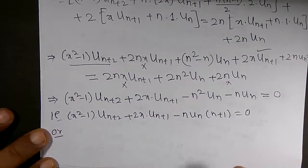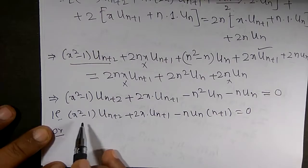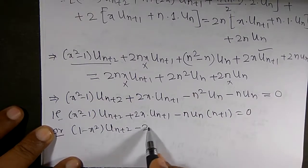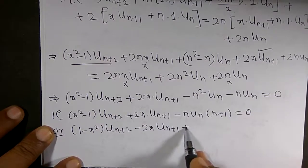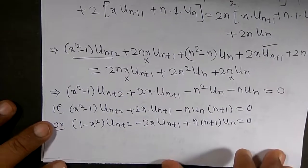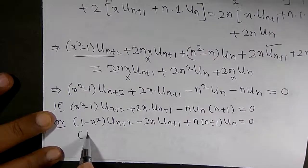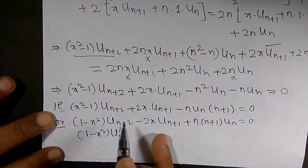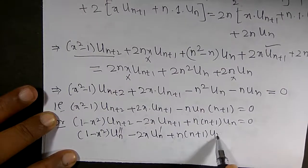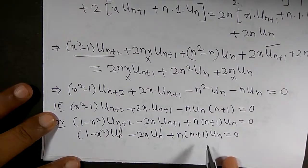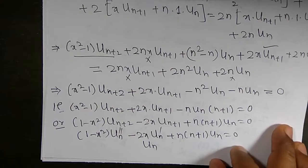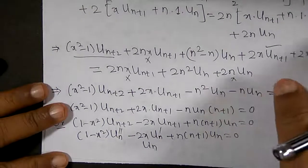This can be rewritten as (1 - x²)·u_{n+2} - 2x·u_{n+1} + n(n+1)·u_n = 0, or equivalently (1 - x²)·u_n'' - 2x·u_n' + n(n+1)·u_n = 0. From this equation we can see that uₙ satisfies the Legendre differential equation.